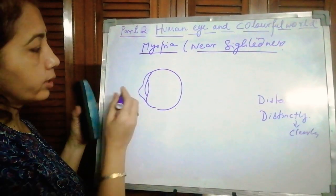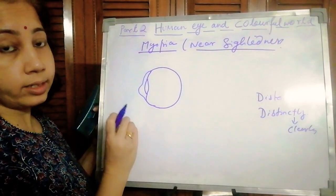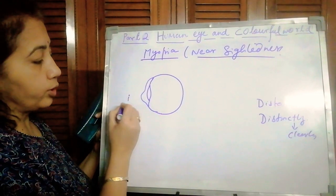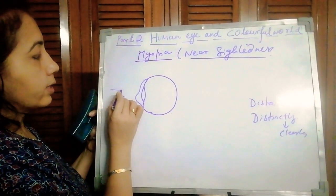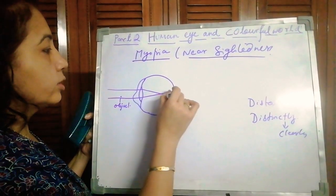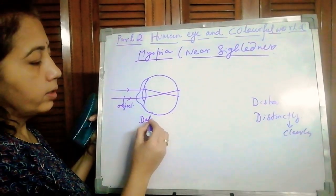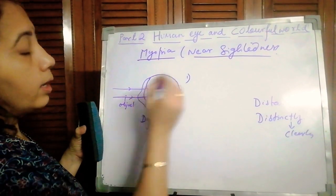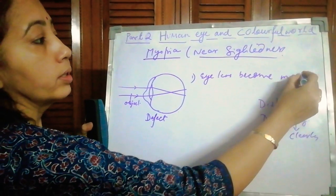In this defect, a person can see near objects. For the diagrams, you have to draw everything with a sharp pencil and eraser — never with a pen. These dots represent the object. A person can see a near object properly, but when rays are coming from a far object the lens is not able to converge all the beam onto the retina. That is the defect of myopia. Why does this happen?